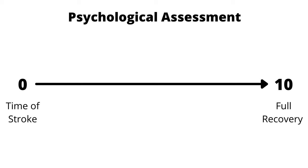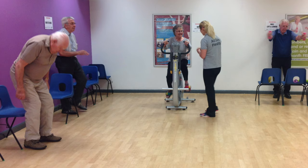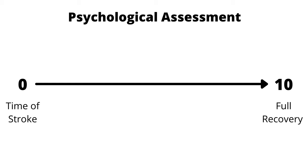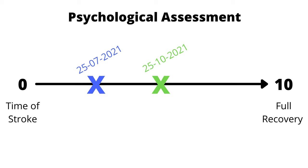We use a straight line with a zero at one end that represents the point of your stroke when you are most affected, through to a 10 at the other end which represents a full recovery where you feel you're back to normal. I would ask you to mark a cross on the line that best represents where you feel you are right now, and we would date that mark for future reference. After a period of three months where you have been exercising in a stroke class, in the gym, swimming pool or at home, we would ask you to do the same again and mark a cross on the line based on how you feel you've recovered, and again mark a date with it.